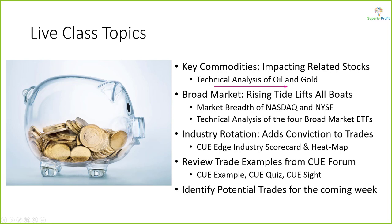As usual, in today's topics we look at oil and gold — the commodities that tend to impact related stocks — and we'll analyze them using technical charts. When taking swing trades, we like to align them with the market's direction. We'll study market strength using market breadth of NASDAQ and NYSE and also technical charts of the broad market ETFs. In addition, we'll align trades with industry strength using the industry scorecard and heatmap. Along the way we may go through recent trade ideas from our traders forum and look for potential trades for the coming week.